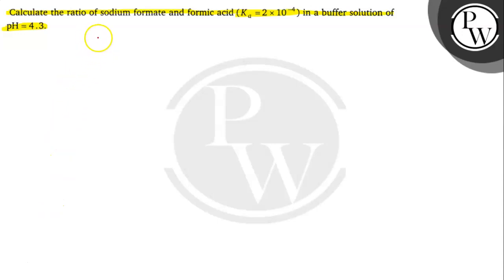Sodium formate, that is HCOONA, plus formic acid HCOOH. So this is a mixture of weak acid plus salt of its conjugate base anion and cation from strong base. That means it is an acidic buffer.